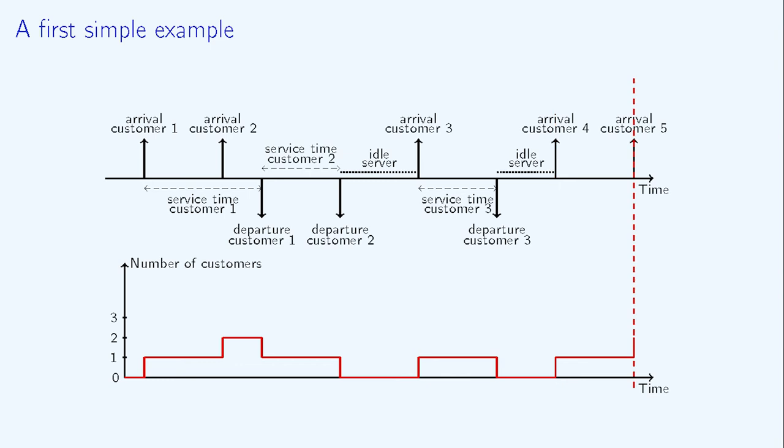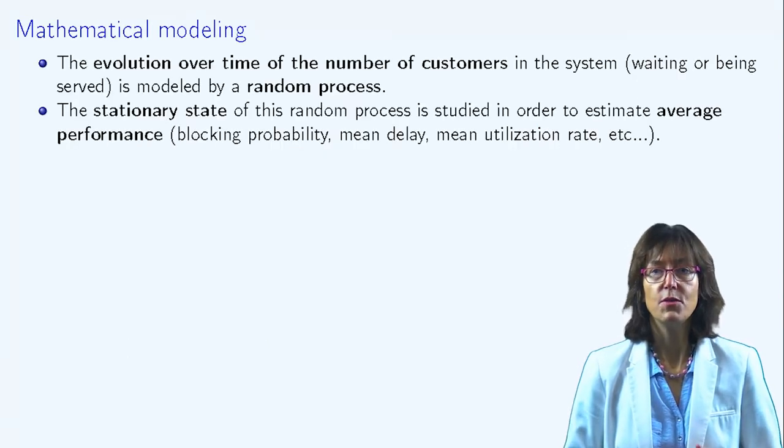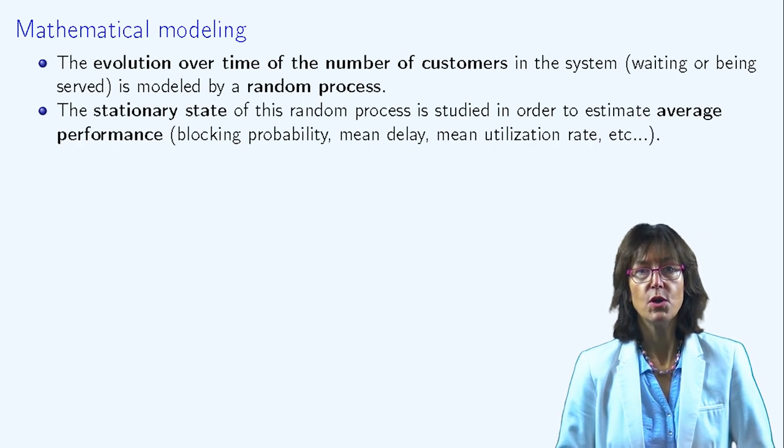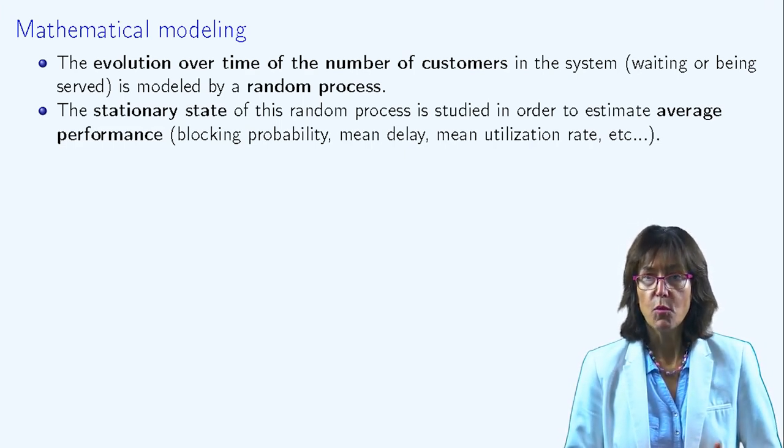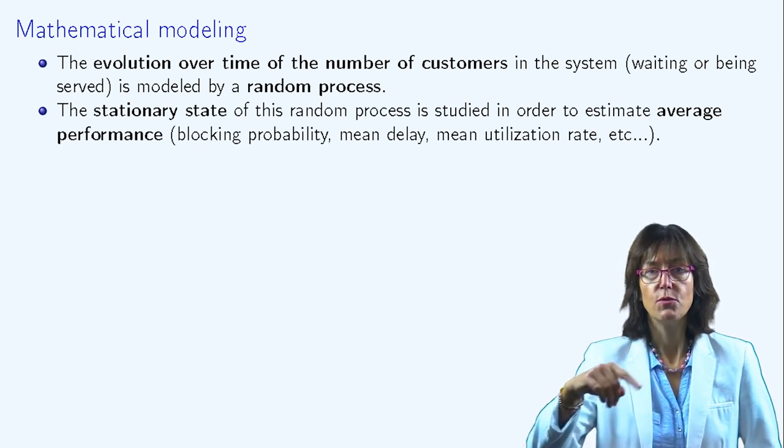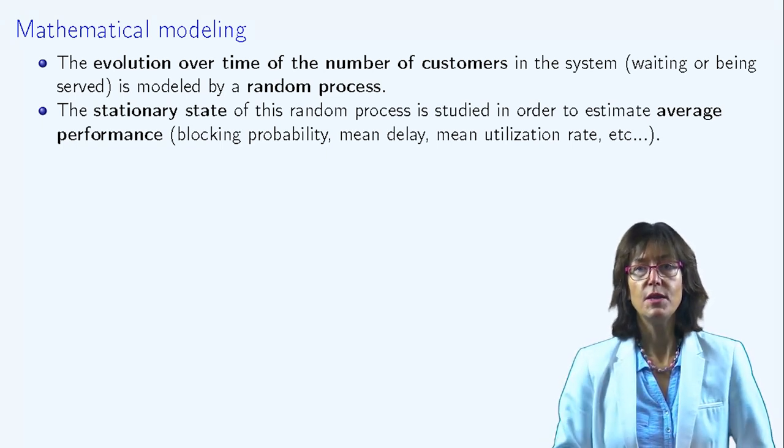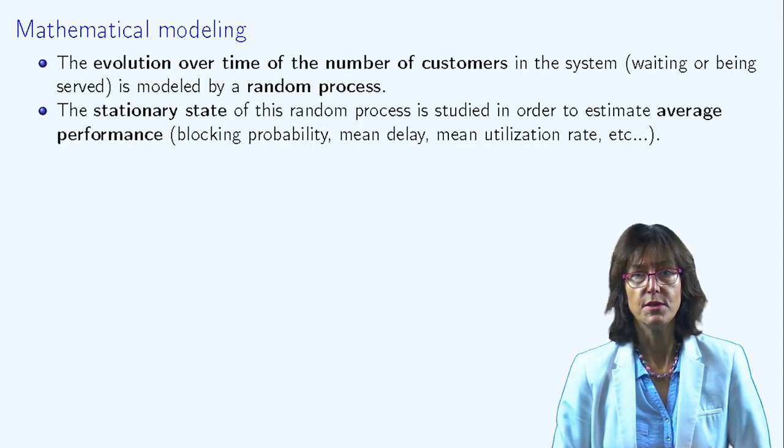This leads us to think about the mathematical modeling of the system. In what follows, what we model is the number of customers in the system. To be more precise, the evolution over time of the number of customers in the system is modeled as a random process.